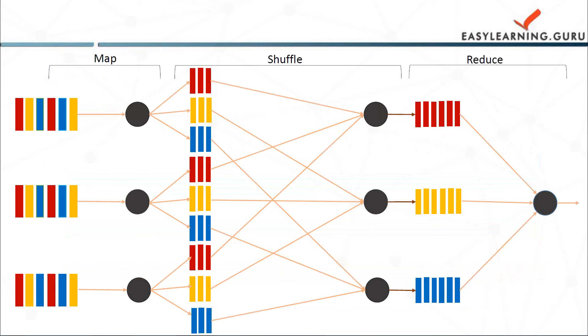Then the third step is shuffle the map output to the reduce processors. So the MapReduce system designates reduce processors, assigns the K2 key value each processor should work on and provides that processor with all the map generated data associated with that particular key.